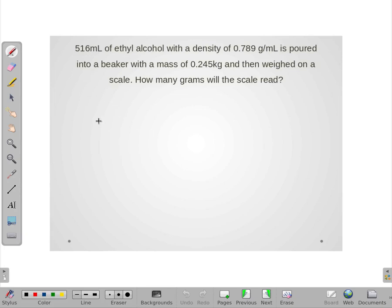Alright, so I'm going to start with that 516 milliliters and I'm going to turn it into grams of ethyl alcohol by using the density as a conversion factor. So the milliliters cancel out. Therefore, the 0.789 goes up here for the grams.